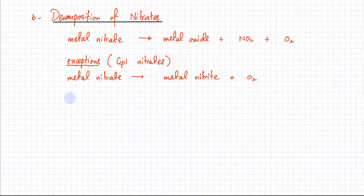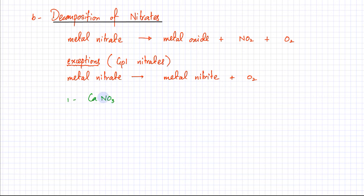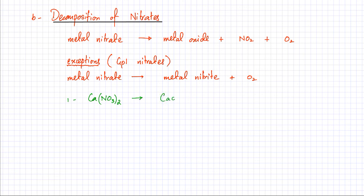For example, calcium nitrate: since Ca is 2+ and NO3⁻ is 1−, the formula is Ca(NO3)2. Since it's not a group 1 nitrate, it decomposes to produce calcium oxide, NO2 gas, and oxygen gas. Balancing the equation gives two NO2 molecules and half an O2 molecule.